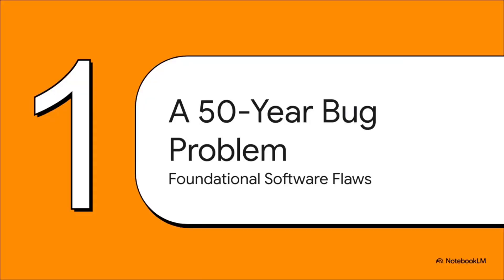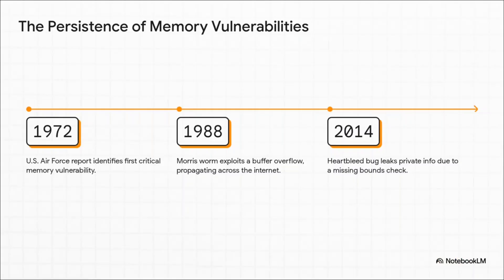Let's get into our first section. We need to talk about the villains of this story — these really nasty bugs related to memory and concurrency that have just refused to go away. The very first memory vulnerability was flagged way back in 1972. Then you have the Morris worm in '88, which used one of these bugs to basically cripple the early internet. And this isn't ancient history — think about the Heartbleed bug in 2014. That was another memory error, and it was huge.